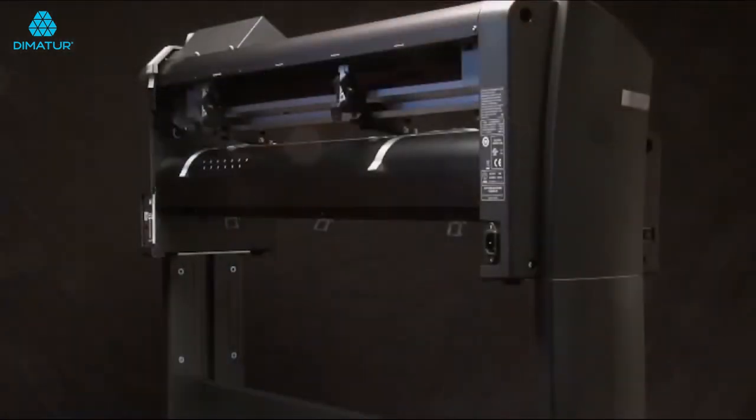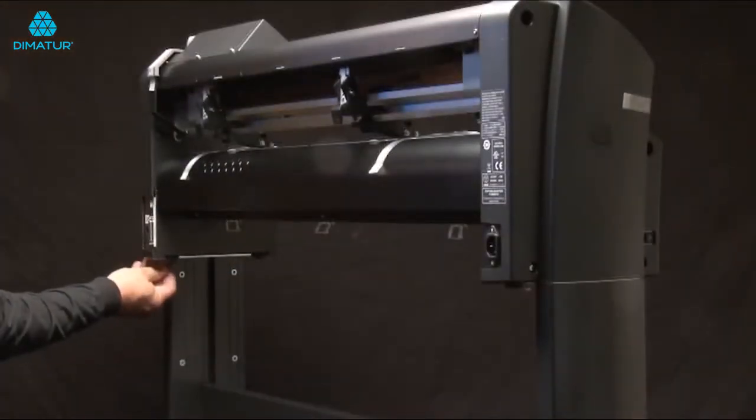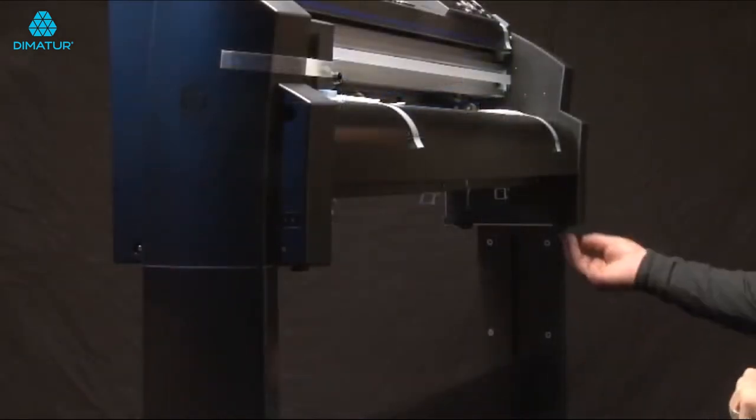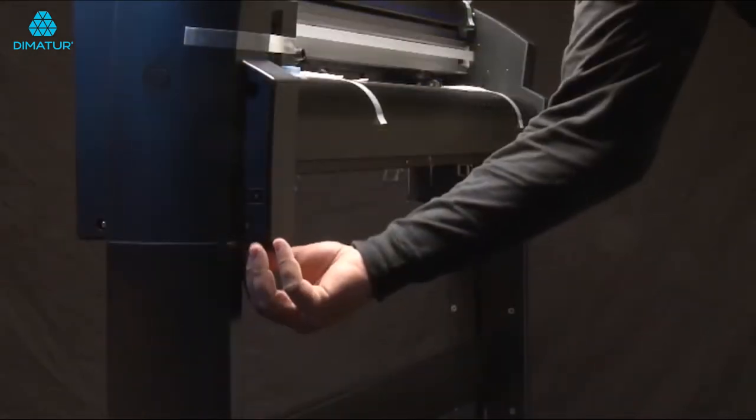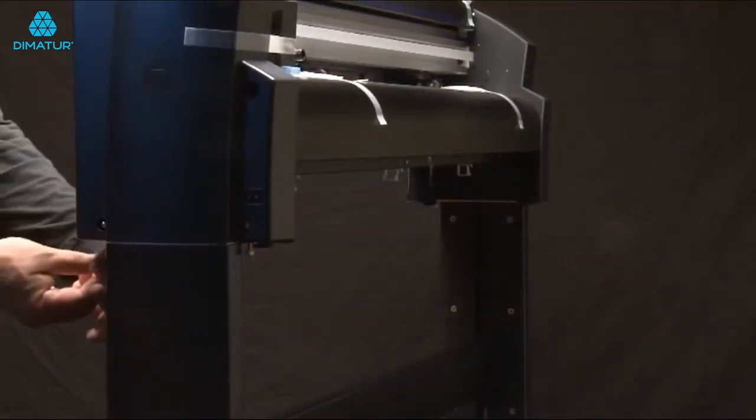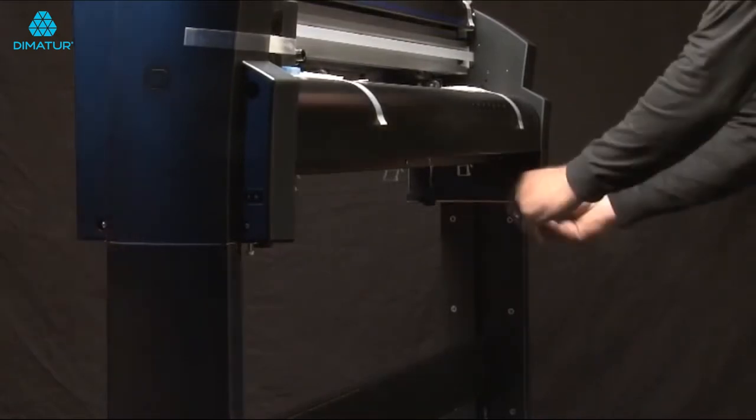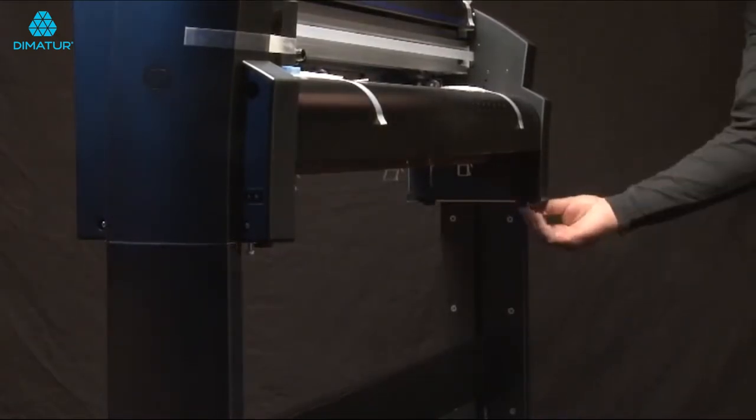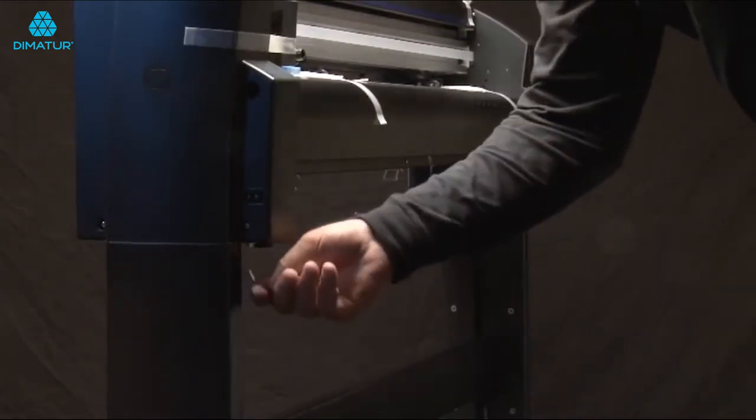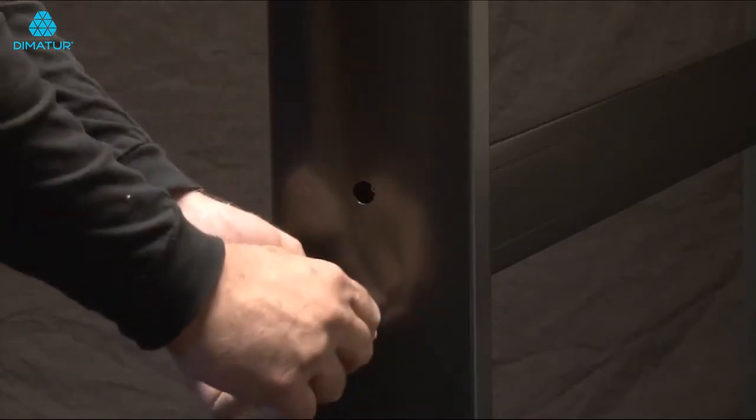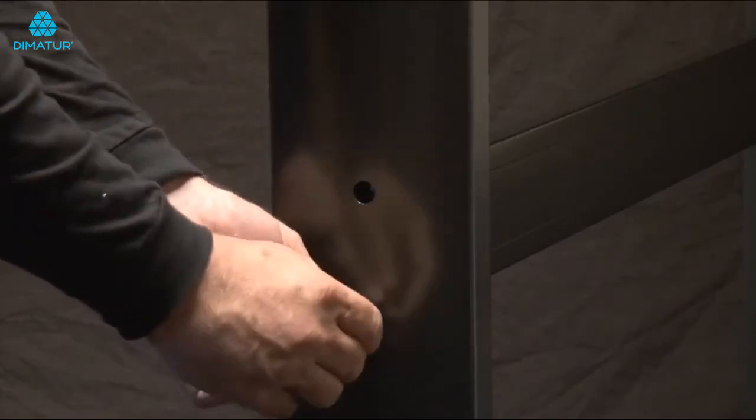Place the FC8600 onto the stand so that the positioning pins match up with the holes on the FC8600. And then fasten with the four M5 socket head screws. At this point, tighten the four socket head cap screws using the provided Allen wrench, and then tighten the four socket head cap screws on both legs.